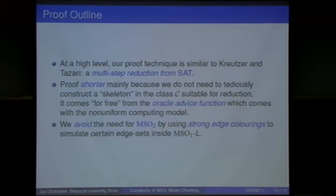So what's the proof outline? We basically follow the direction sketched by Kreutzer and Tazari. It's a multi-step reduction from SAT to our problem and then you arrive at the contradiction.